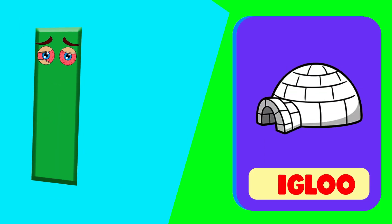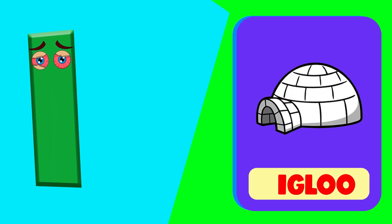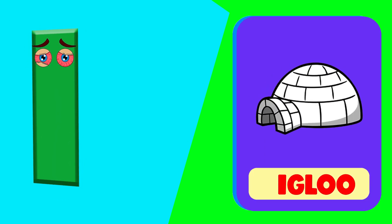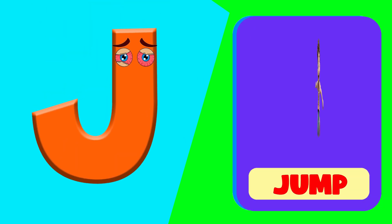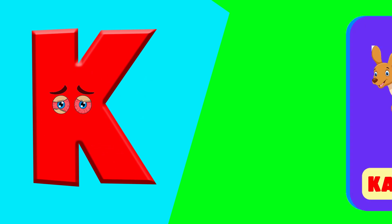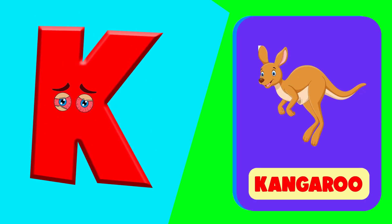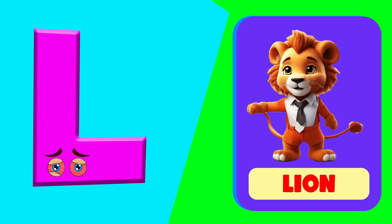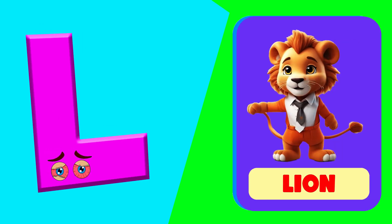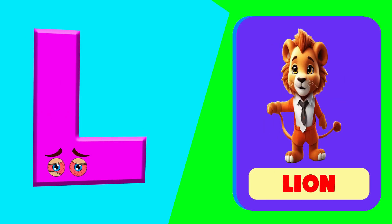I is for igloo. i, i, igloo. J is for jump. j, j, jump. K is for kangaroo. k, k, kangaroo. L is for lion. l, l, lion.